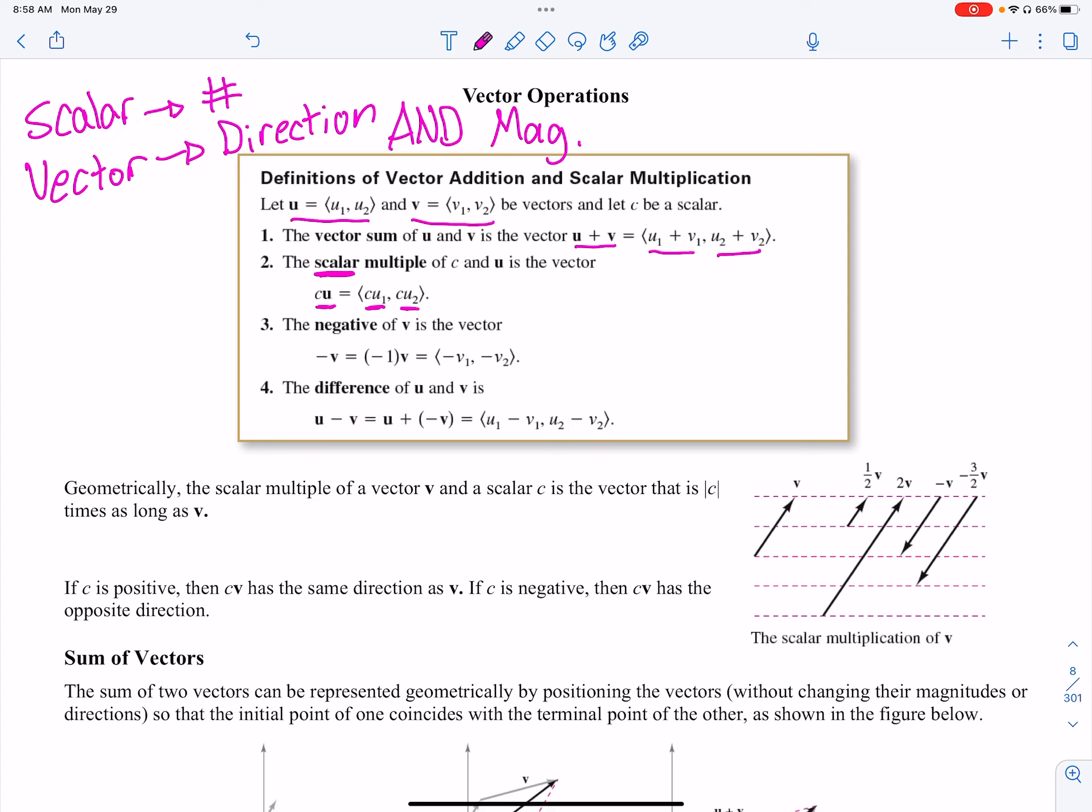The negative of v is just like multiplying by a negative one. So when I multiply by a negative, it just goes to both components negative. The difference of u and v - if I'm going to subtract them, I could just think about it this way: distribute the negative, and then it becomes this. So when we're adding and subtracting and even multiplying by a number, it's exactly what you think it would be.